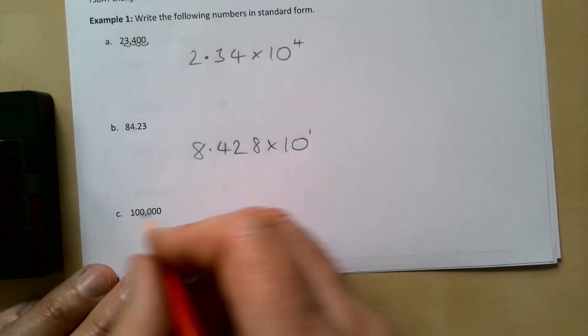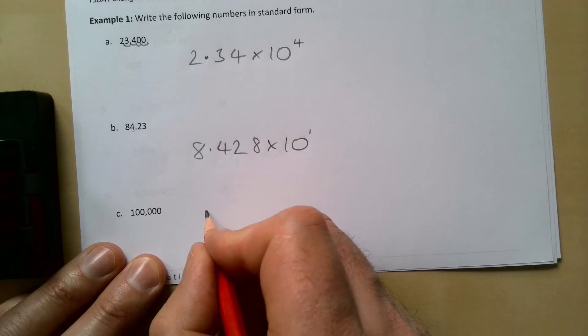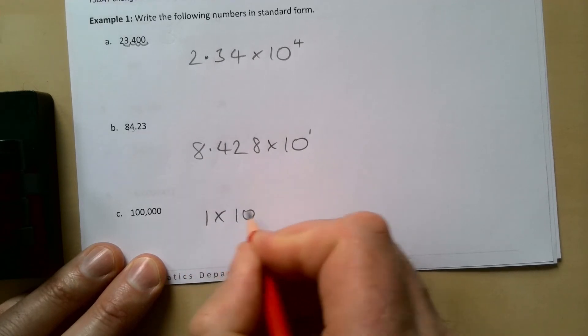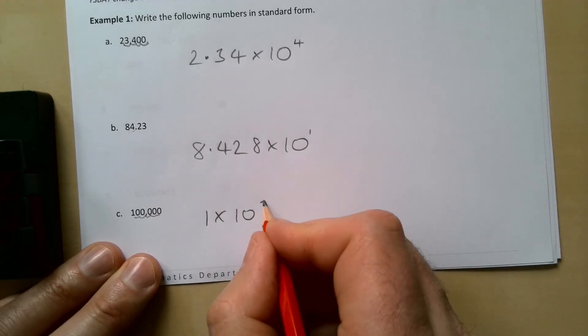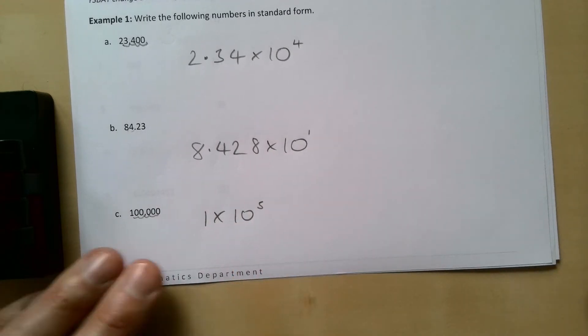Then 100,000 is going to be 1 times 10. How far has it moved? 1, 2, 3, 4, 5 places, so it's 1 × 10 to the power of 5.